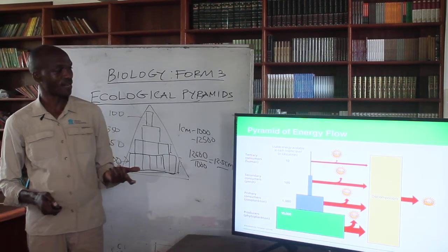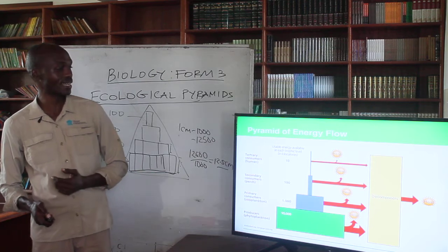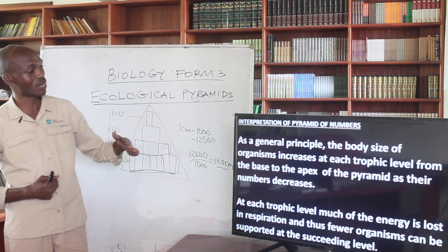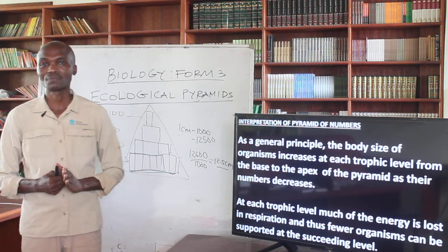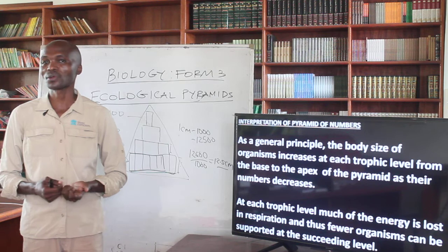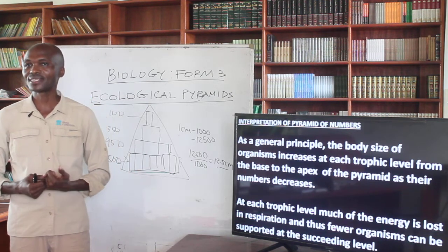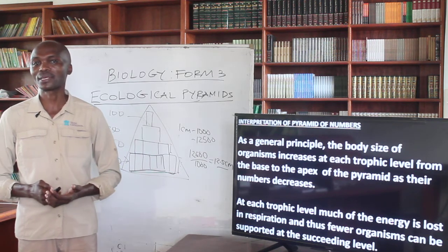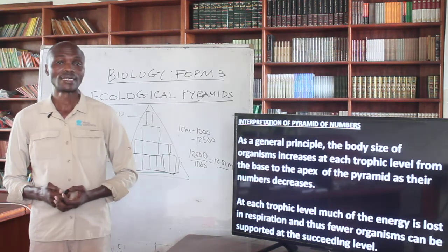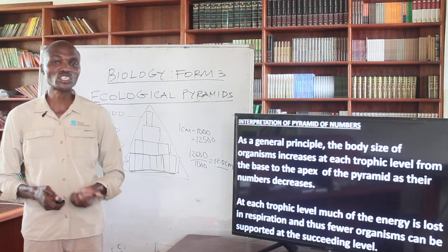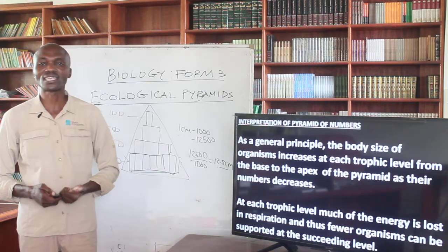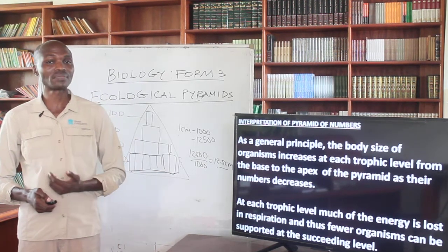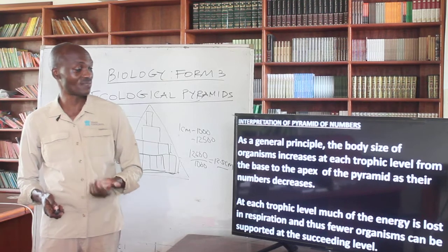Welcome back to the session dealing with the Pyramid of Numbers. In this session we are going to look at the interpretation of the Pyramid of Numbers. As a general principle, the body size of organisms increases at each trophic level from the base to the apex of the pyramid, while much of the energy is lost in respiration, and therefore fewer organisms can be supported at higher trophic levels.